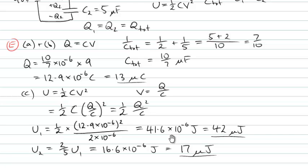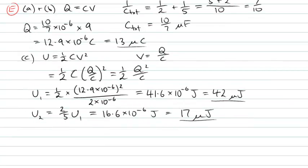The last thing I should do is just a quick check to assess whether that answer is consistent and makes sense. One thing I can do is say this 42 microjoules and the 17 microjoules, if I add those together, I get the total energy stored in the capacitors of the system. But I should be able to check if that's the energy I get.